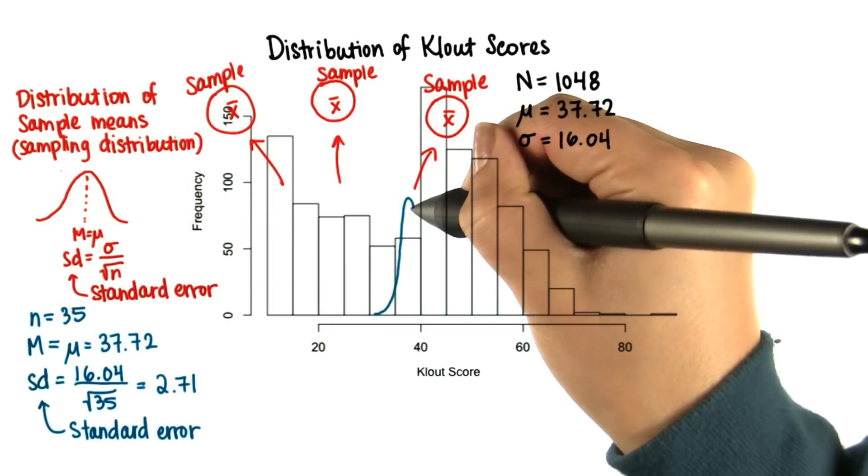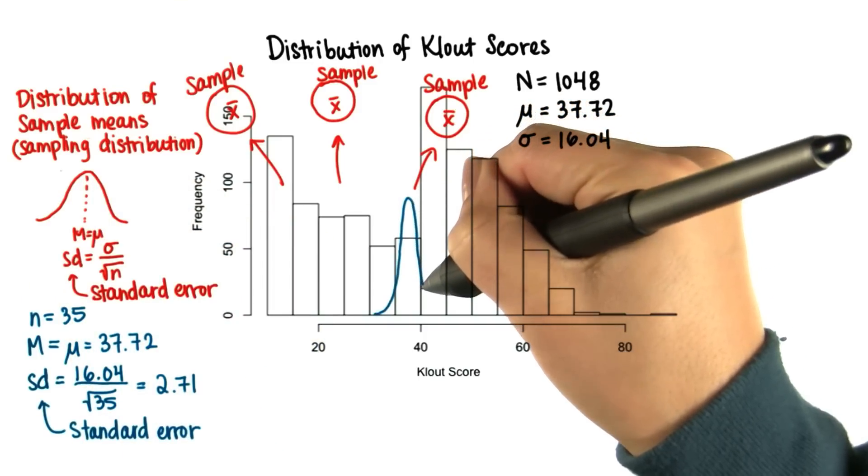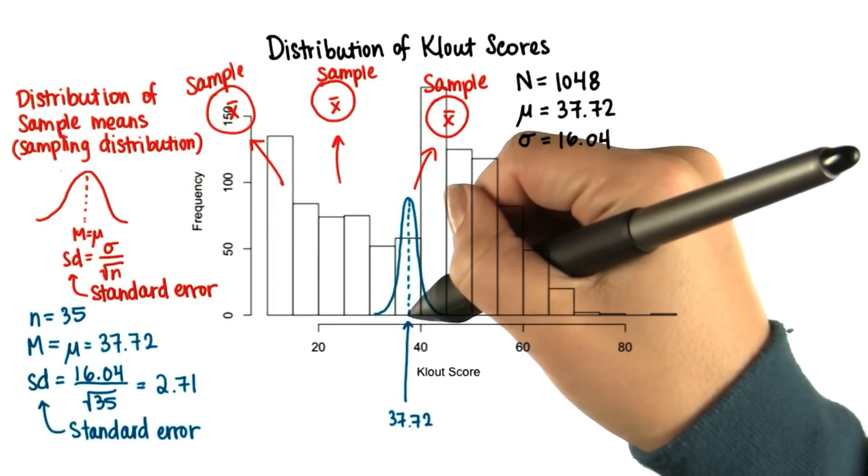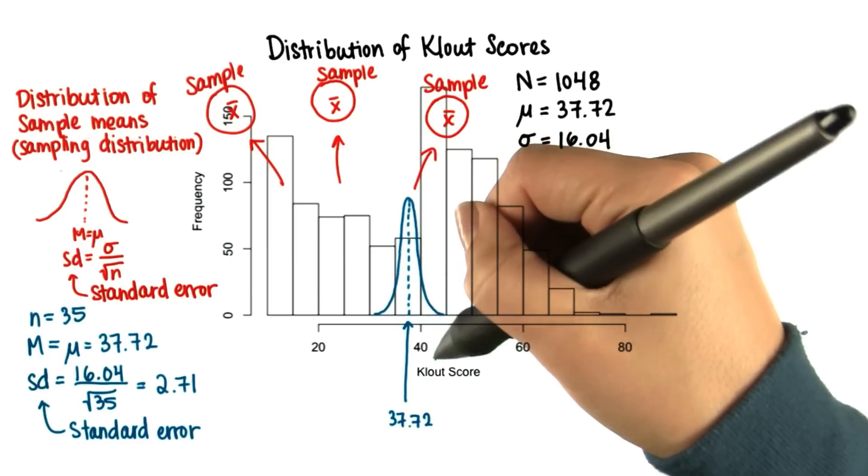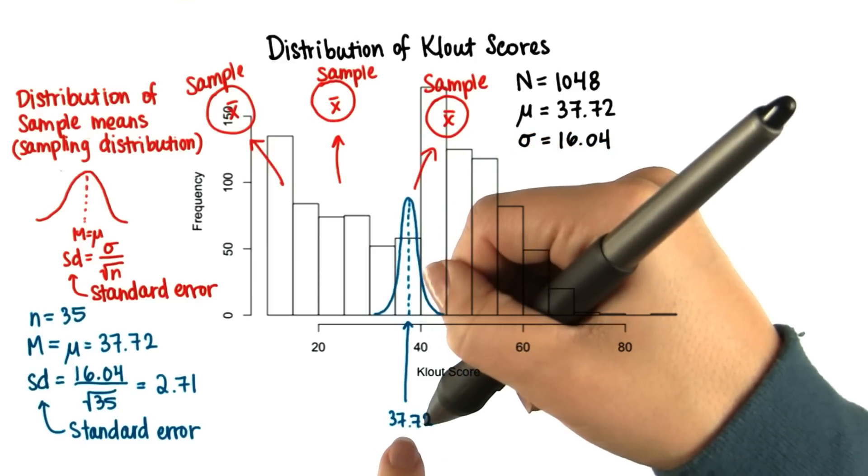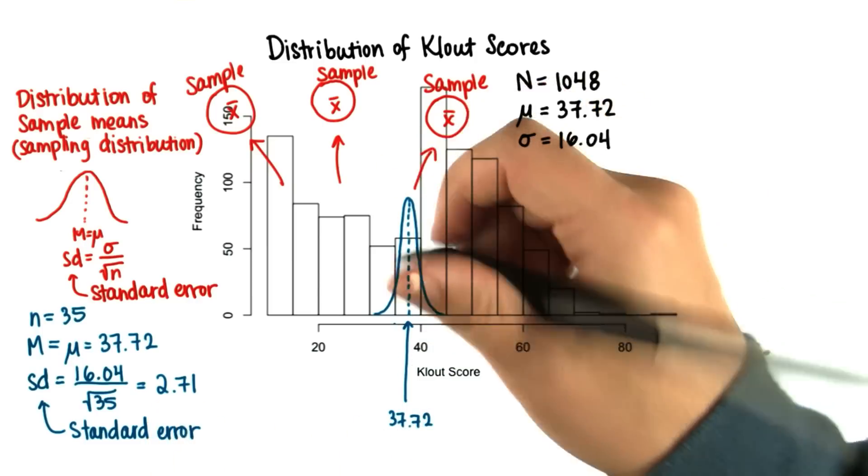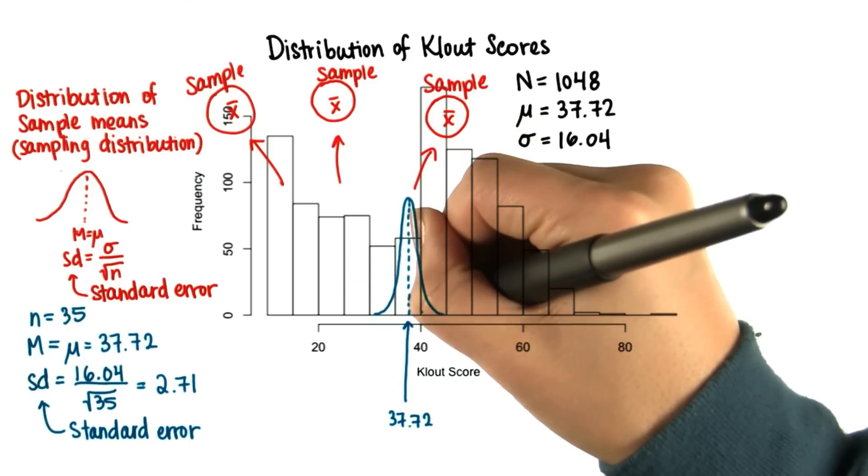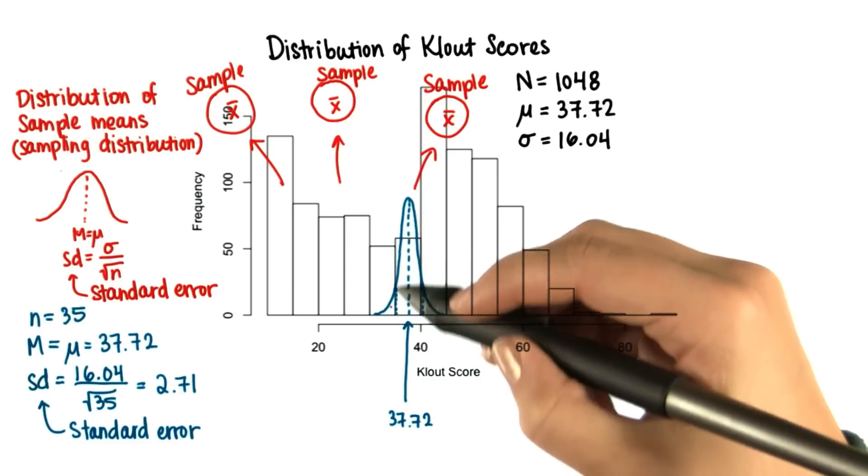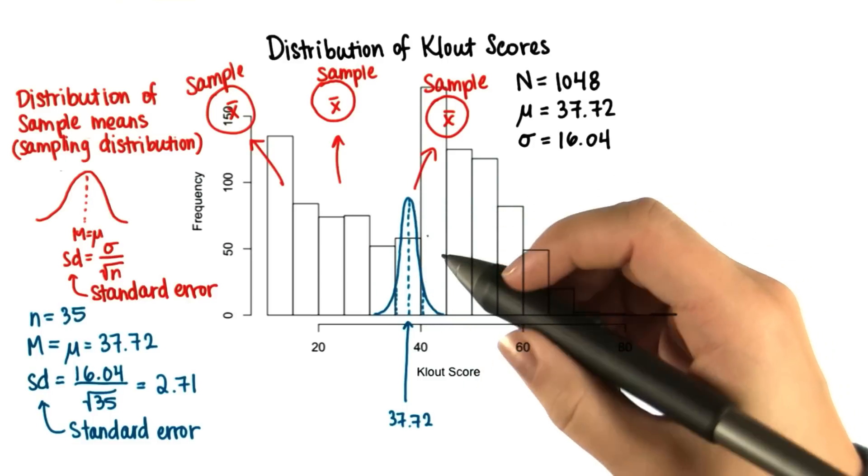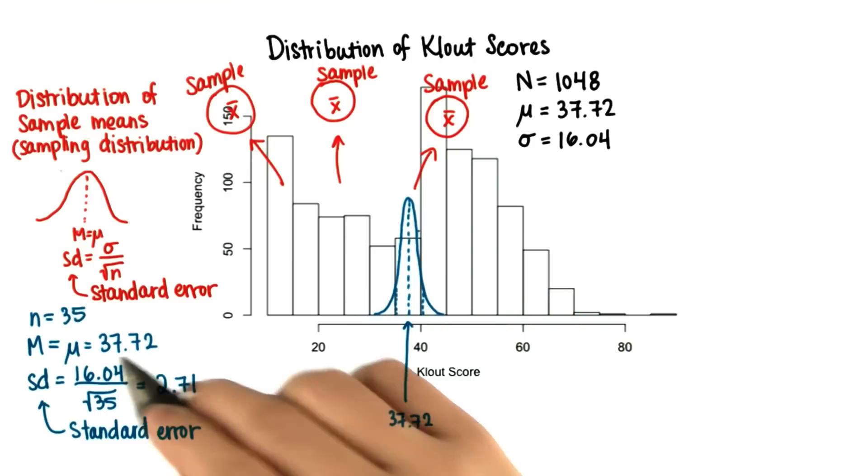Now if we plot this sampling distribution, it'll look something like this. One standard deviation away from the mean would be 37.72 plus 2.71, and minus 2.71. So we know what the distribution should look like of all sample means of size 35.